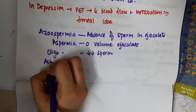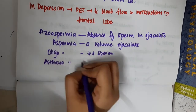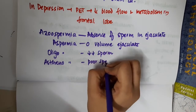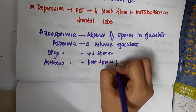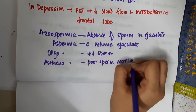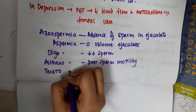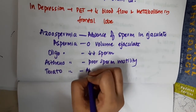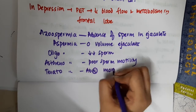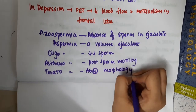Then we have Asthenospermia — in Asthenospermia it is poor sperm motility. Then we have Teratospermia, which shows abnormal morphology of sperm.